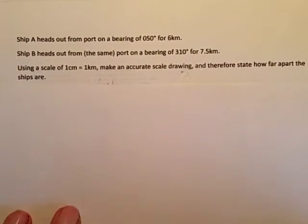Ship A is travelling on a bearing of 50 degrees for six kilometres and ship B is heading out from the same port on a bearing of 310 degrees for seven and a half kilometres. We're being asked to make a scale drawing and from that work out the distance apart that the ships are.